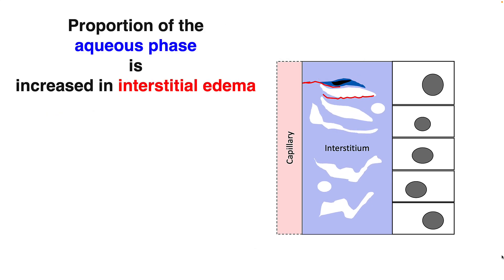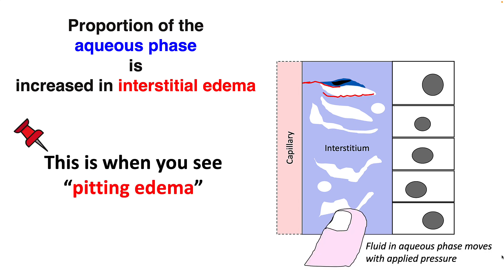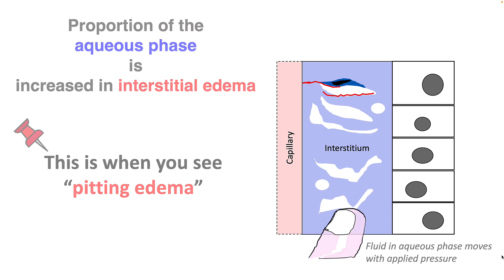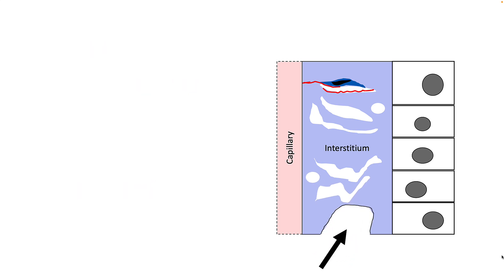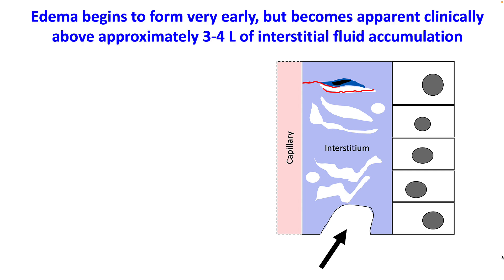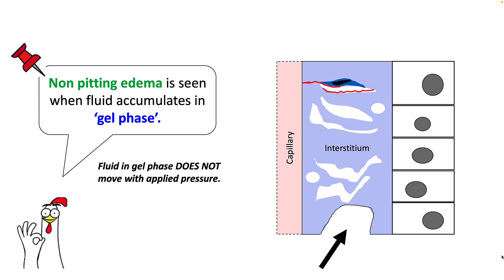The proportion of the aqueous phase increases in interstitial edema, and this is where you start seeing pitting edema. The fluid in the aqueous phase moves with applied pressure, so it leaves a dimple when you apply pressure on the skin. Edema begins to form very early but becomes clinically apparent when you have about 3 to 4 liters of interstitial fluid accumulation. Non-pitting edema is seen when fluid is accumulated in the gel phase, as fluid in the gel phase does not move with applied pressure.